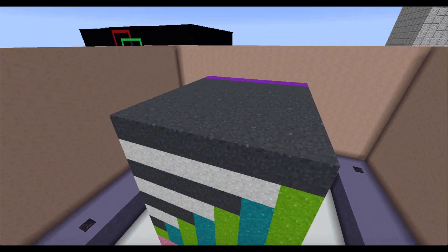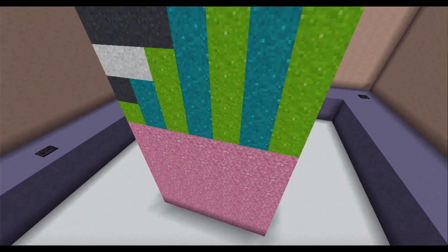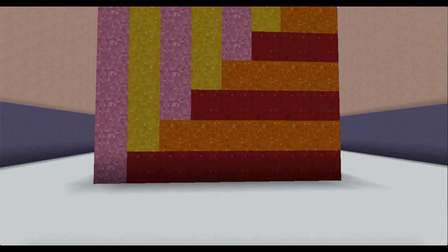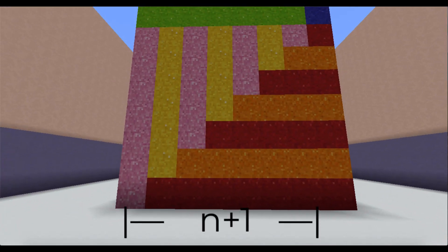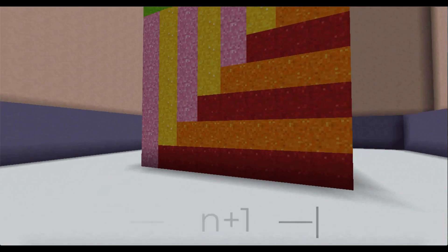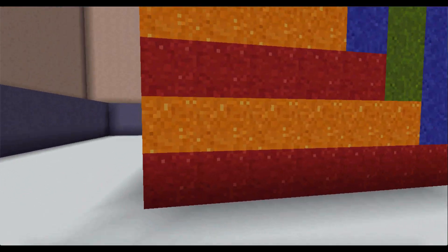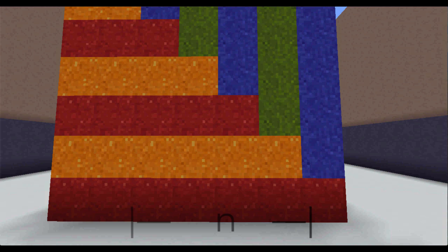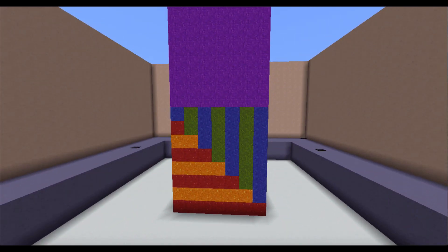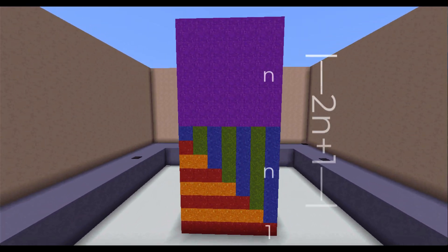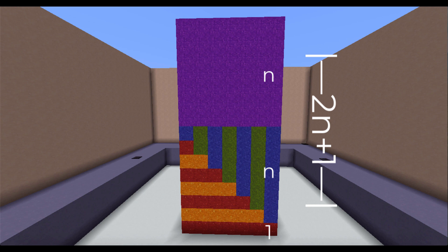And so you can see the width of this rectangular prism is n plus 1. The length is n. And the height is 1 plus n plus n. That's 2n plus 1.